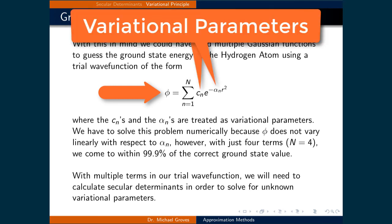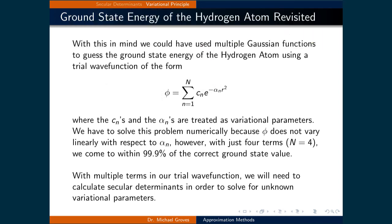where the c's and the alphas are treated as variational parameters. We have to solve this problem numerically because our trial wave function phi does not vary linearly with respect to alpha as it is inside an exponential term.